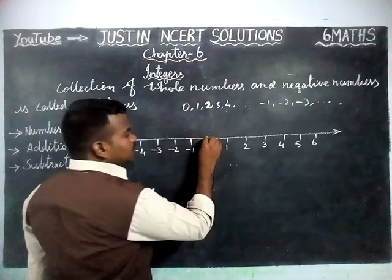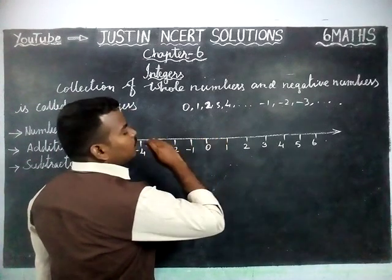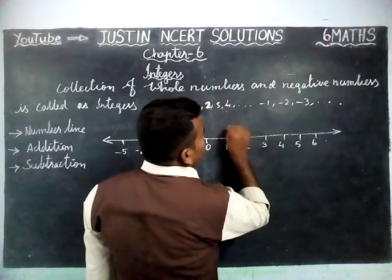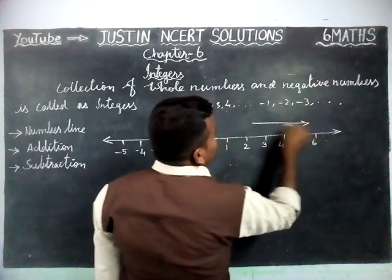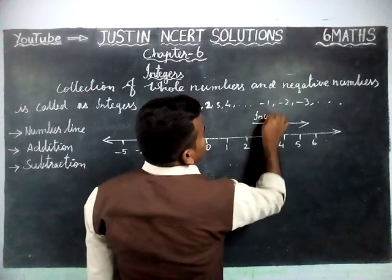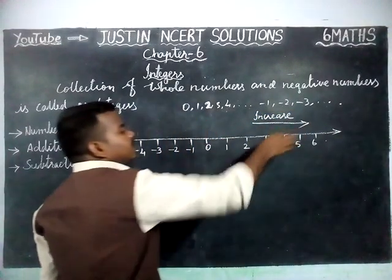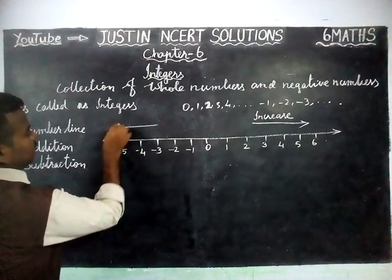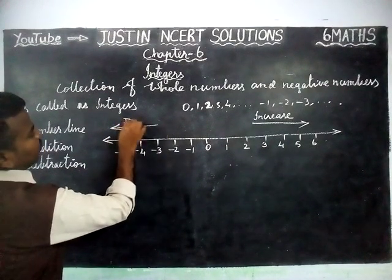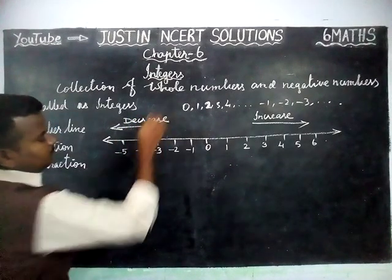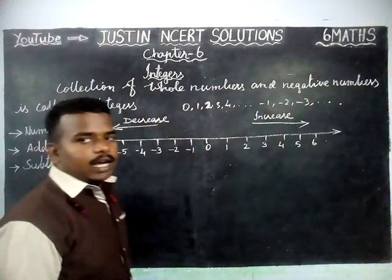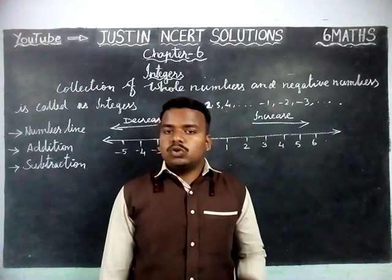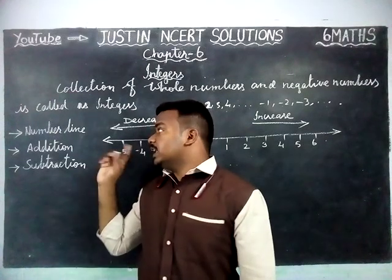So, 0 is the originating point. From 0, if we are moving right-hand side, the value will increase. If I am moving two steps left-hand side on the number line from 0, my value will decrease.